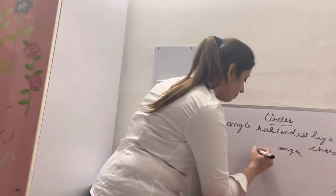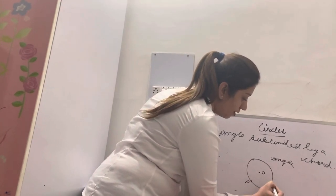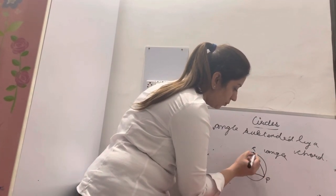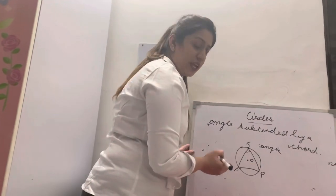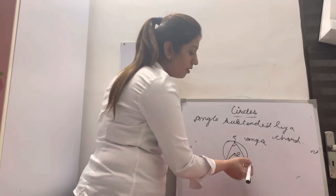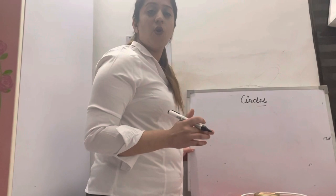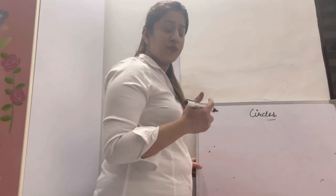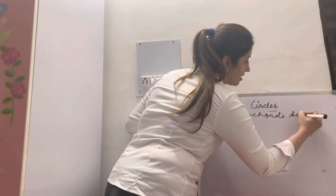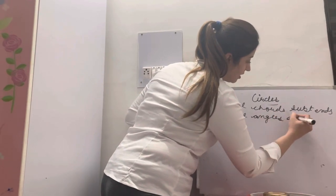If I draw a circle with center O and chord PQ, and take a point R and join PR and RQ, this is the angle subtended by chord PQ at the circumference. If I join OP and OQ, this is also the angle subtended by chord PQ at the center. There is a theorem which says: two equal chords subtend equal angles at the center.